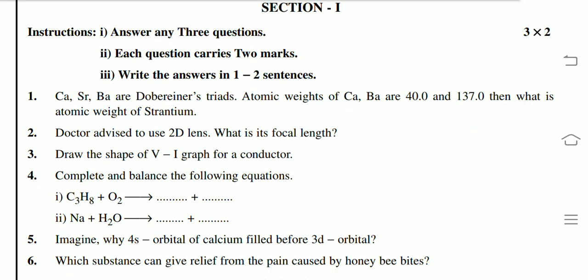First question: Ca, Sr, Ba are Dobereiner's triads. Atomic weights of Ca, Ba are 40 and 137, then what is atomic weight of Strontium? Doctor advised to use 2D lens, what is its focal length?